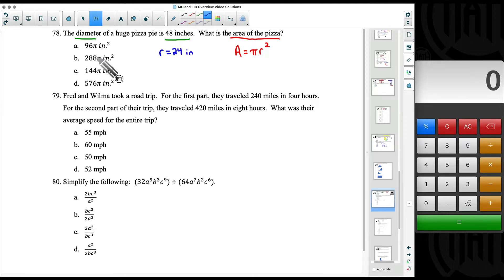Now if we look at our answer choices, notice that pi is still in our answer, so we do not need to use 3.14 here. We have our radius which is 24 and we want to square that radius. Do not multiply by 2.